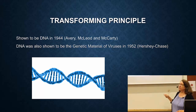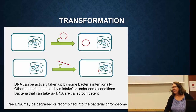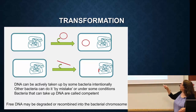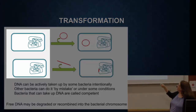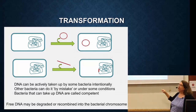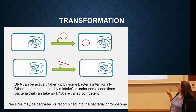It was shown that the transforming principle — the thing being transferred — is DNA. That was demonstrated in 1944. What is actually happening is: here's a cell, and some cells can take up DNA either as circles, which we call plasmids, or as linear DNA — just pieces of DNA — and incorporate them either as plasmids or integrate them into their own chromosome.